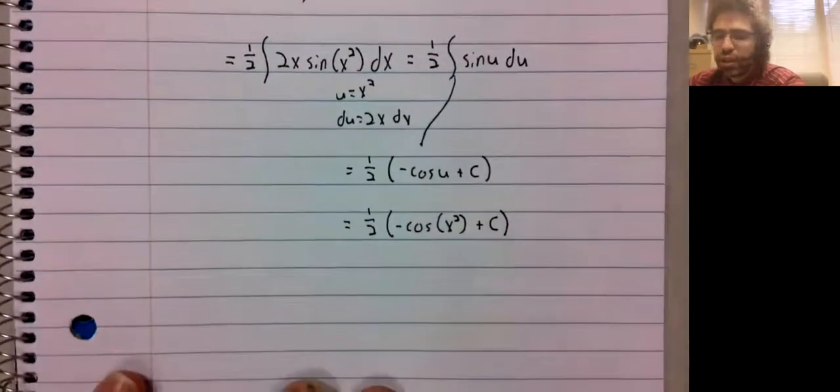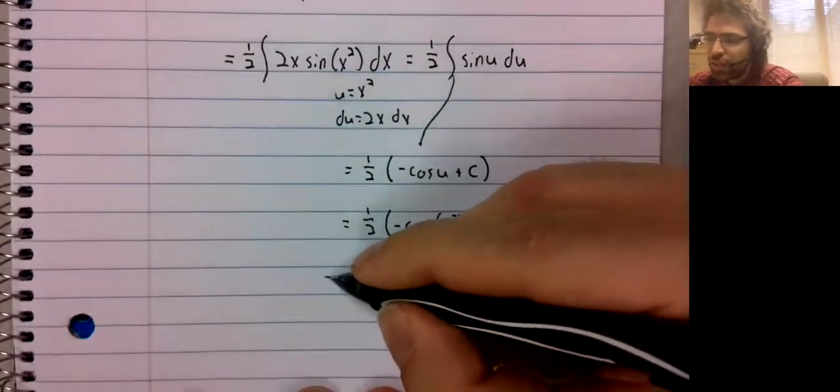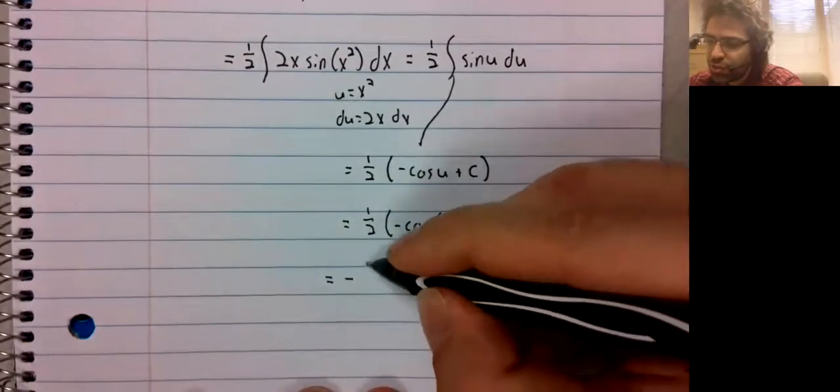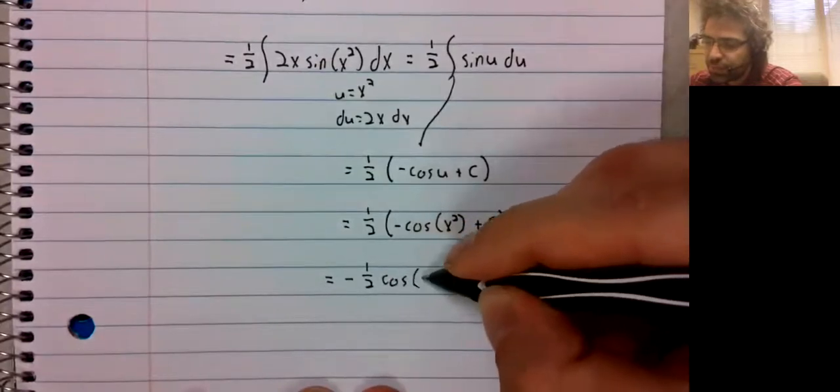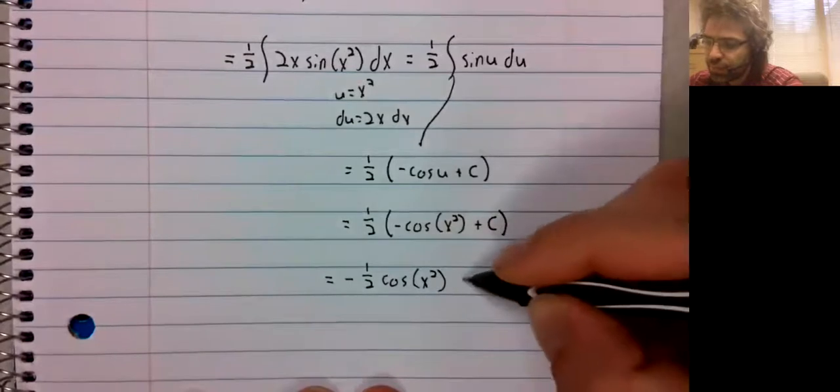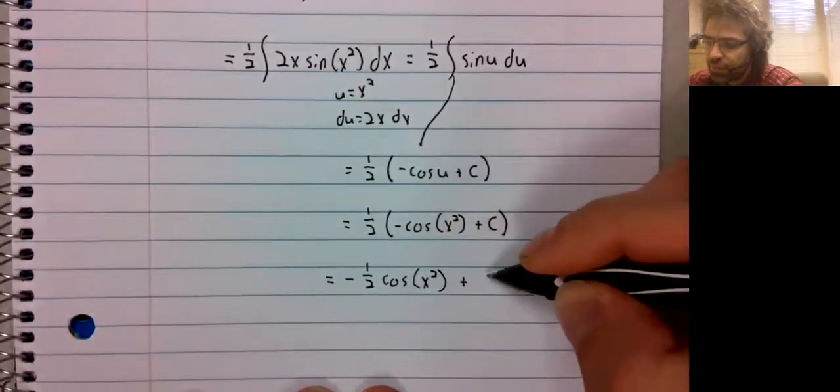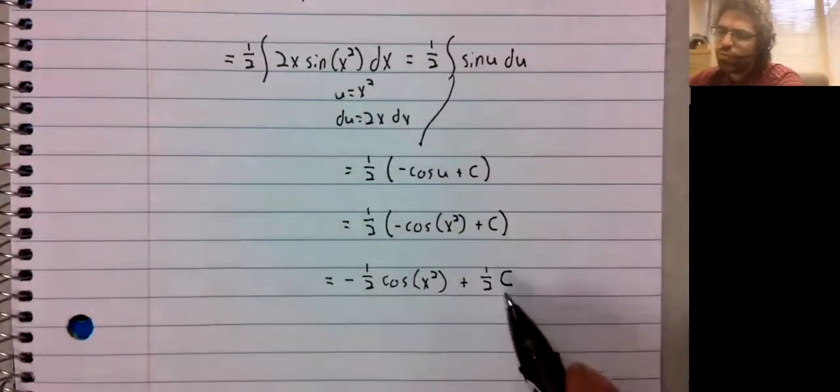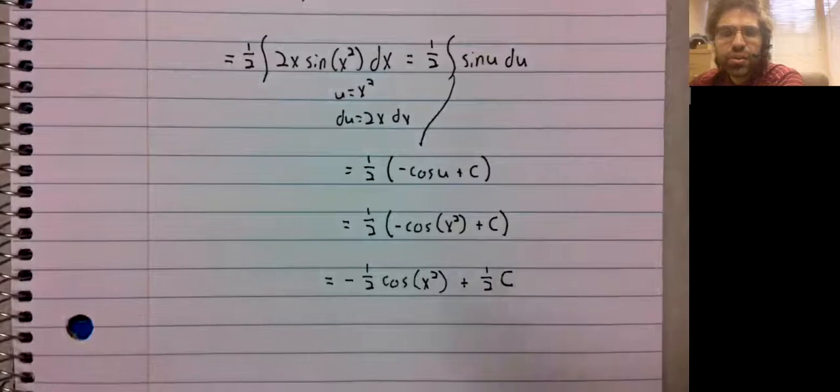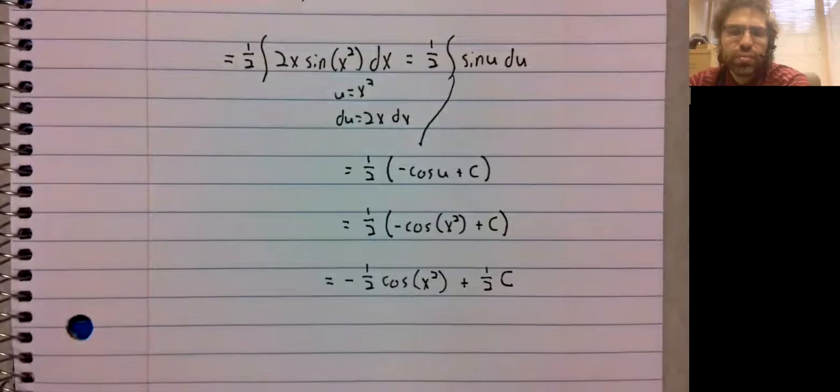And one thing requires comment. We're going to distribute this one half. However, we don't write things like this. Our rationale is as follows: C is a completely arbitrary constant, it could be any real number.